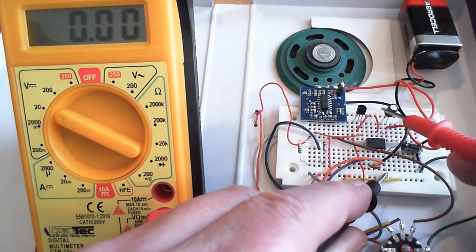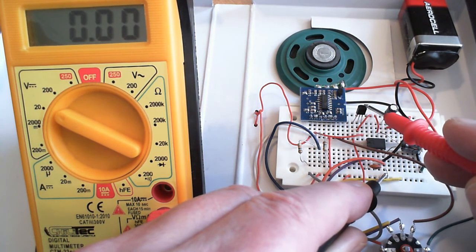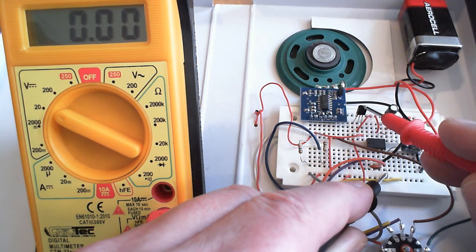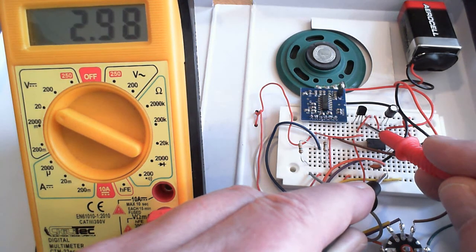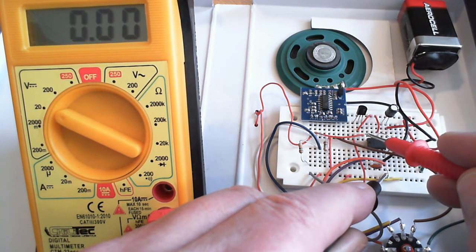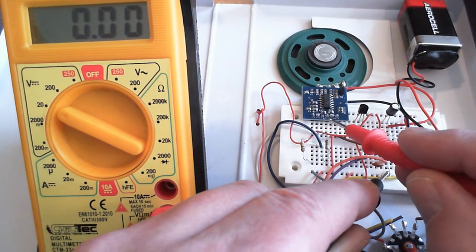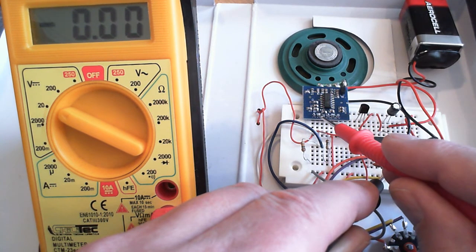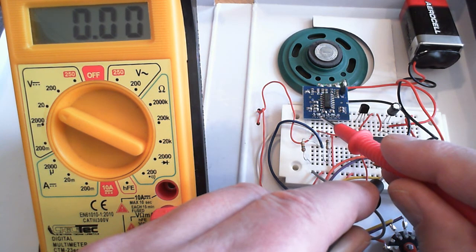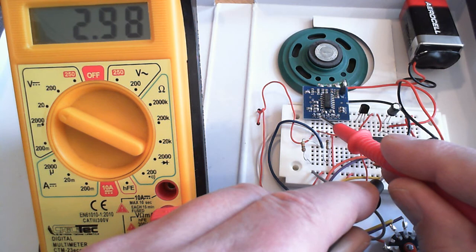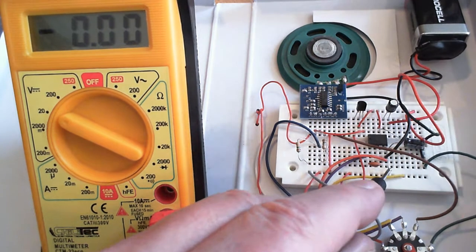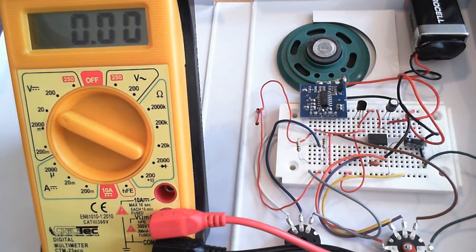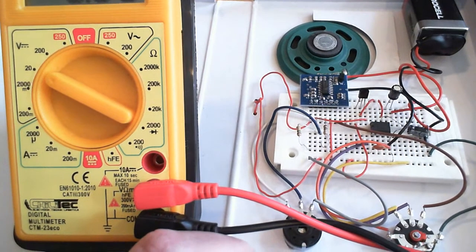Very important is the 3 volts regulator and I should find 3 volts on this point. 2.99 is okay and it should be found at the BAT pin of the radio module. Okay, so this is fine. I can try if the radio is working right now.